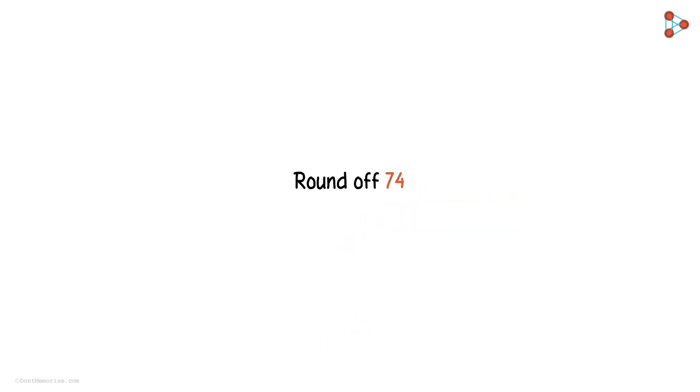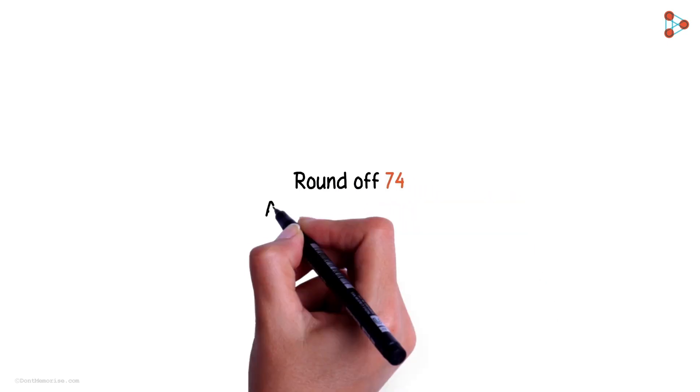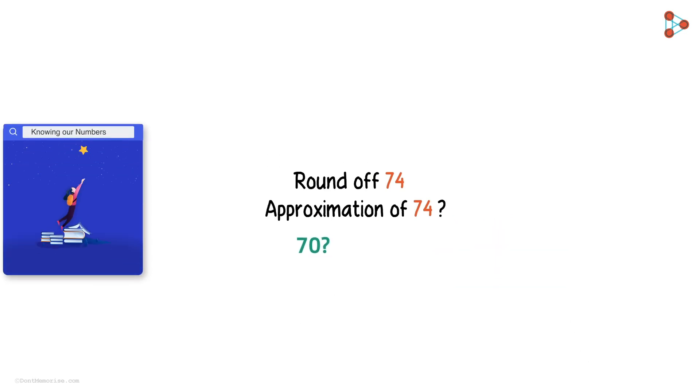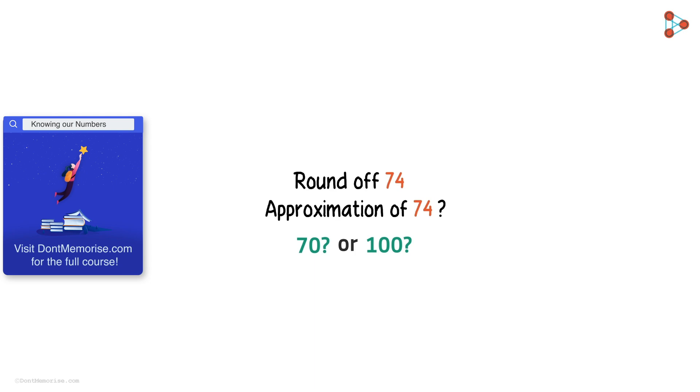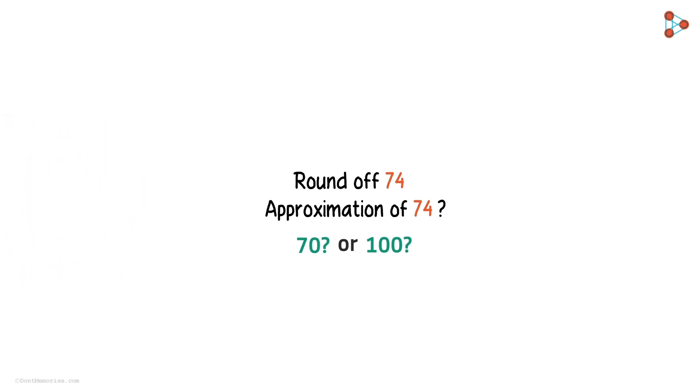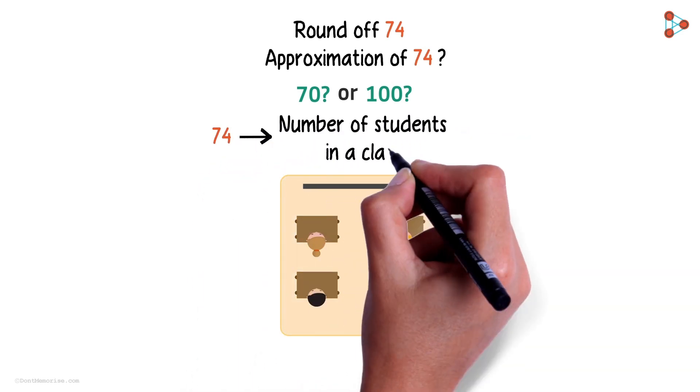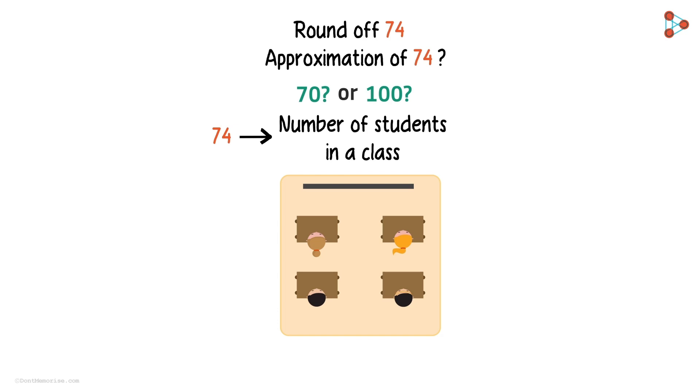For example, let's say we want to round off number 74. What is the best approximation or estimation of the number 74 that you can think of? Is it 70 or 100? The answer depends on what 74 represents in the real world. Say that 74 represents the number of students present in your class on any regular day, say a Monday. Here 70 is a good estimation of 74. However, 100 is not quite a good estimation here. There can't be that many students in a class.